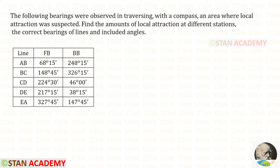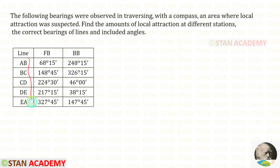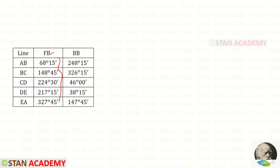Hello everyone. Today we are going to see a problem based on compass surveying. The following bearings were observed in traversing with a compass in an area where local attraction was suspected. We need to find the amounts of local attraction at different stations, the correct bearing of lines, and included angles. The forebearings and back bearings are given for each line. Using the forebearings, we can draw the traverse.